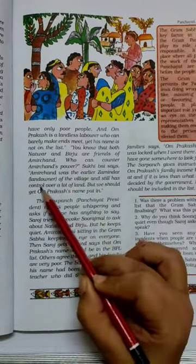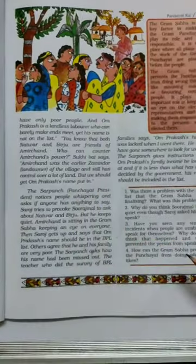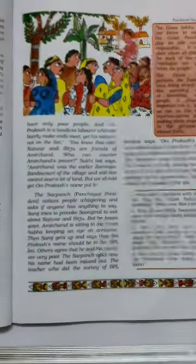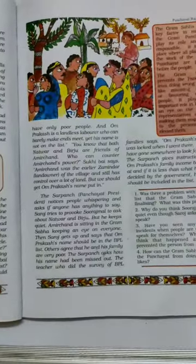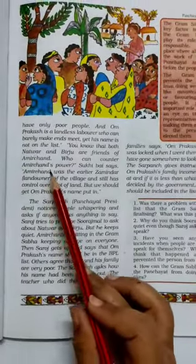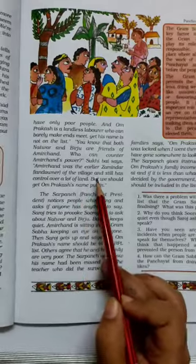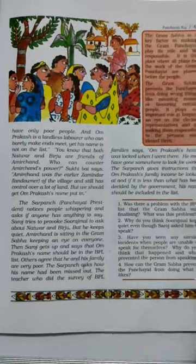Amir Chand was the earlier जमींदार — land owner of the village — and still has control over a lot of land. जमींदार वो लोग होते थे जो गाँव में सबसे ज़्यादा ज़मीन रखते थे, लोगों को अपने पास काम पे रखते थे, उन्हें exploit करते थे — बहुत ज़्यादा काम करवा के बहुत कम पैसे देते थे। But we should get Om Prakash's name put in this list.